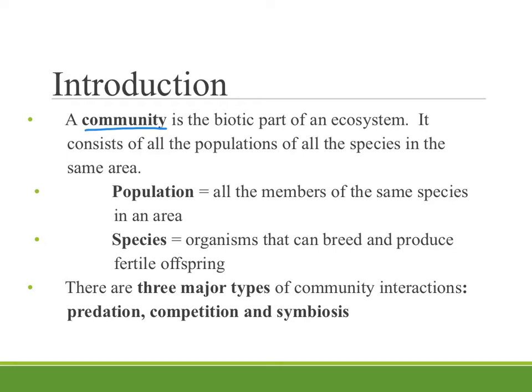Those different organisms can be organized into populations, which are all the members of the same species. Species is kind of a floating definition — a more accurate definition is that it is organisms that can breed and produce fertile offspring among themselves. Sometimes you get differentiation because of geographical differences, but if they can still interbreed and produce fertile offspring, then I think that makes them a species.